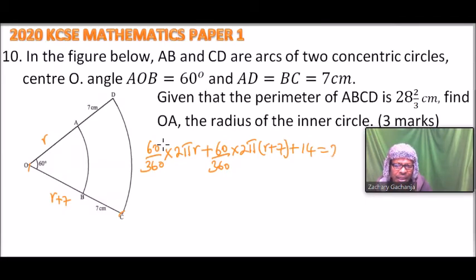That should give you the perimeter which is 28⅔. By finding r, which is the only unknown, you will be able to get the radius of the small circle. We can simplify this and say this is π over 3 times r.